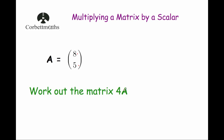So what we're going to do in this question is find the matrix 4A. To do that, all we need to do is multiply all the elements — all of the numbers inside matrix A — by the number 4, and that will give us the matrix 4A.